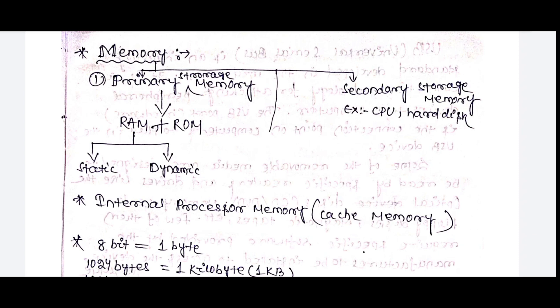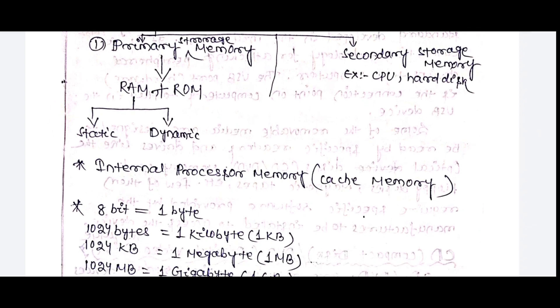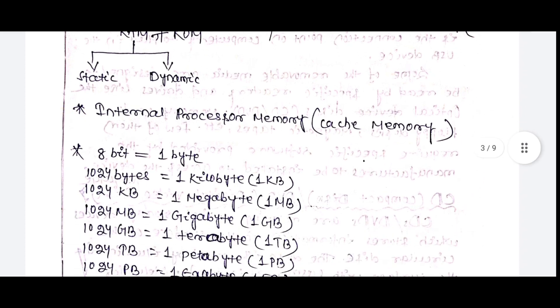There is primary storage memory. Now there is secondary storage memory. The memory can be used in two ways: primary storage memory and secondary storage memory, which is RAM and ROM. RAM is Random Access Memory and ROM is Read Only Memory. RAM has two types: static RAM and dynamic RAM. The internal processor memory can be used as cache memory.